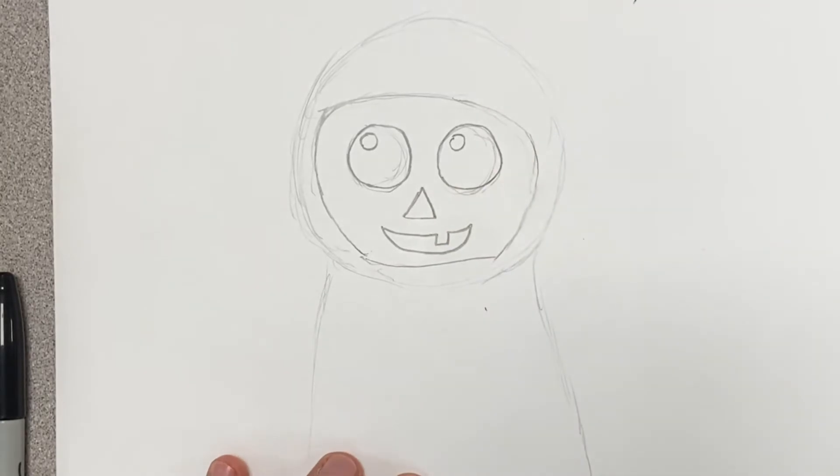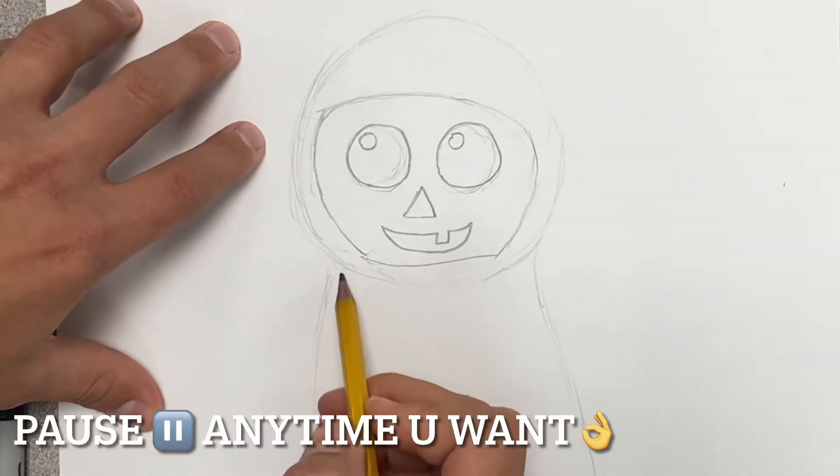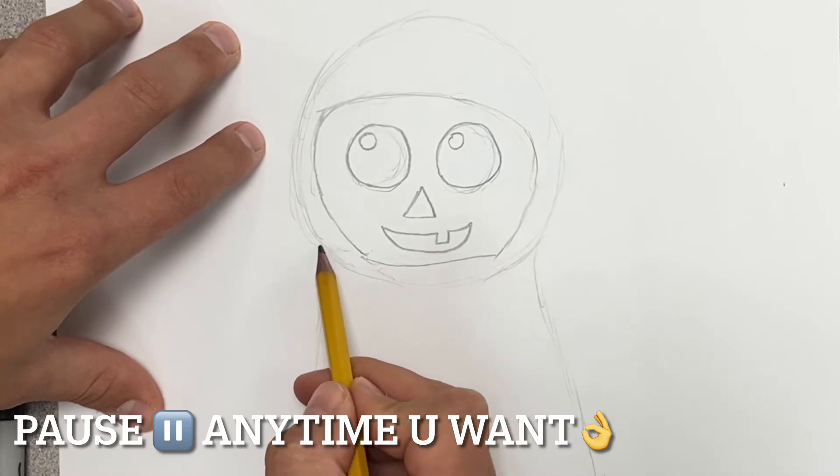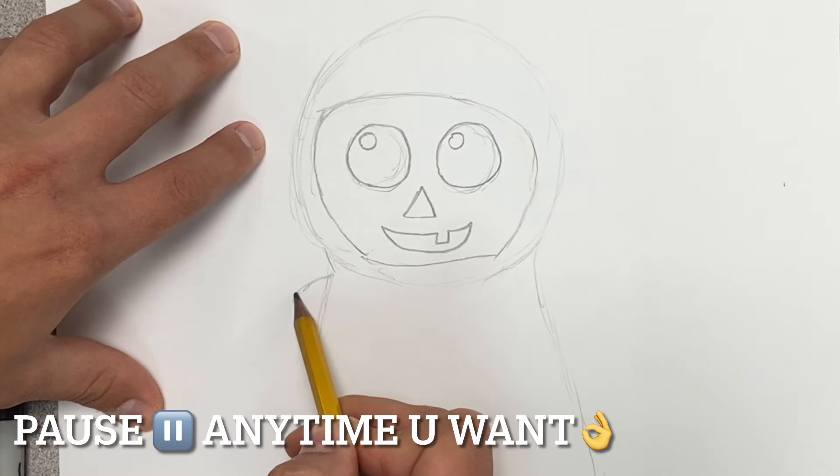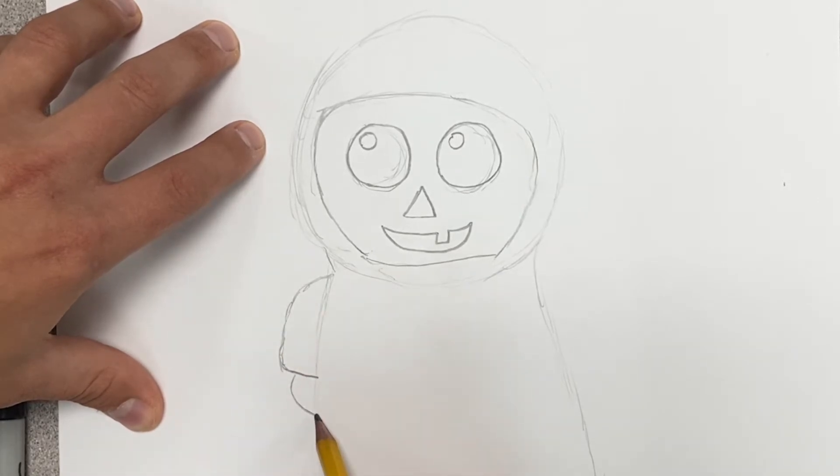Still need some arms over here. So I'm gonna take this side, almost where this kind of meets here. I'm gonna bring that out a little bit and then down. Make that kind of jet over, kind of like a C, and then give them a little paw right there.